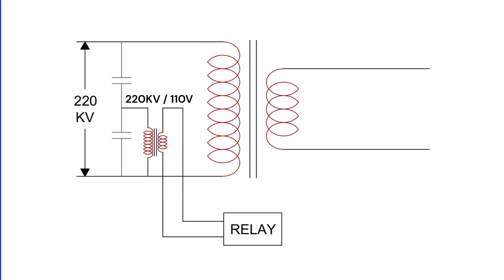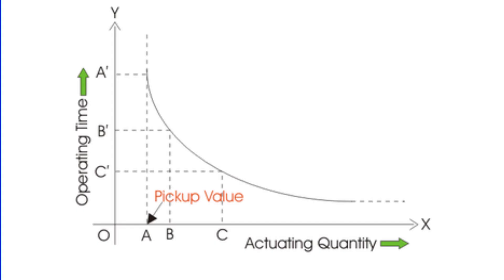Now, does this mean the transformer will trip instantly at a V over F ratio of, say, 2.5? Not necessarily. The core can tolerate overfluxing for a short duration. That's why overflux protection uses an inverse time characteristic. The higher the V over F ratio, the faster the relay will trip.